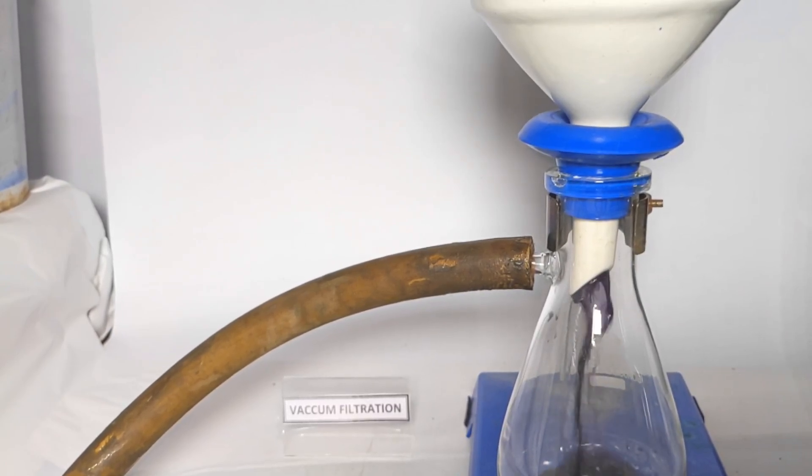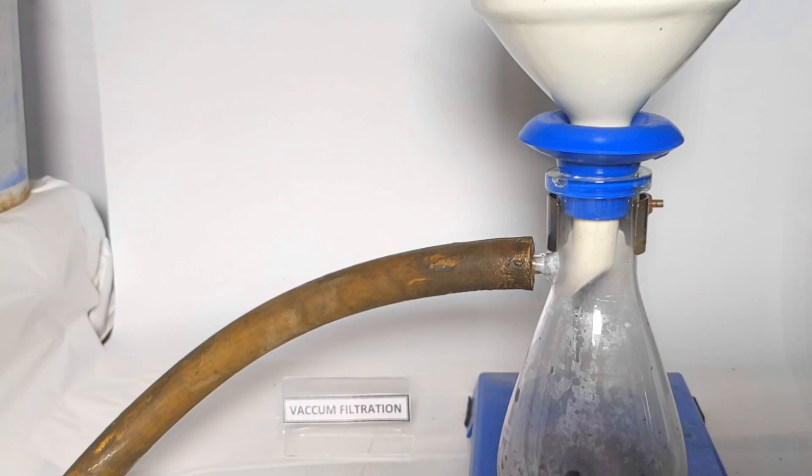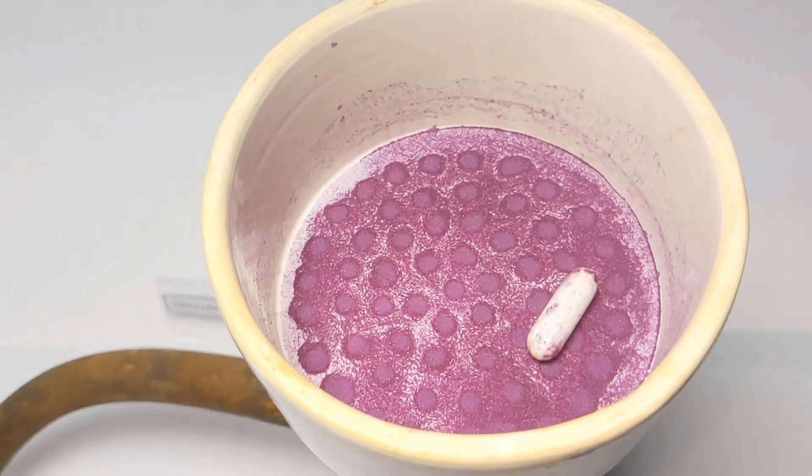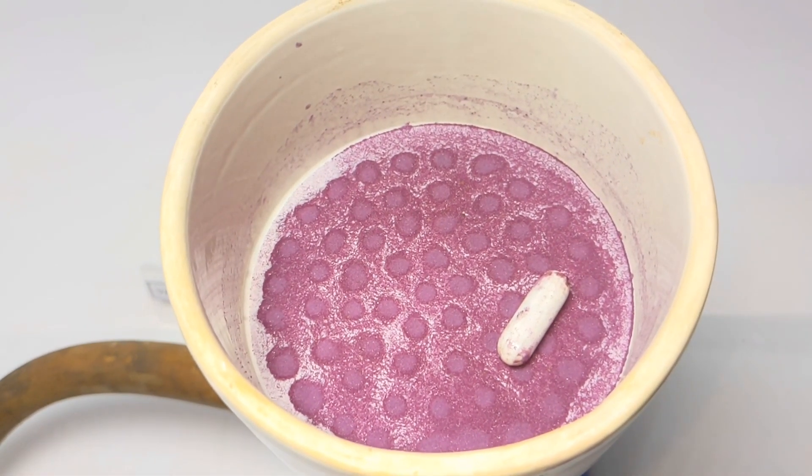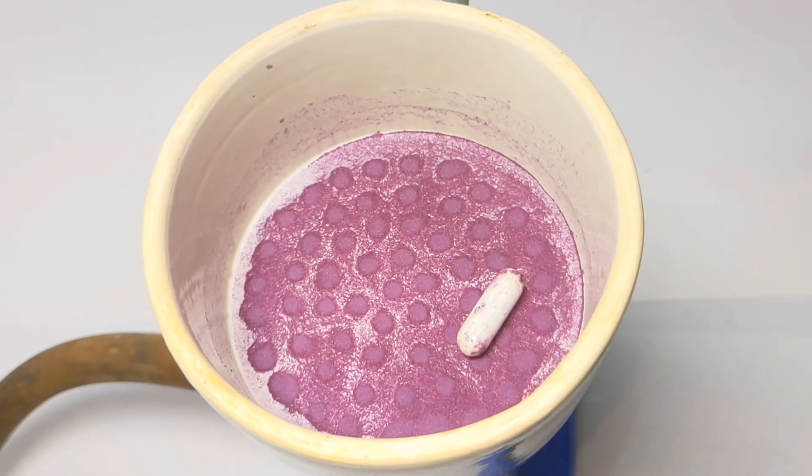The contents were then vacuum filtered and the product was collected in the Buchner funnel. The product has a nice purple color. This is the final product.